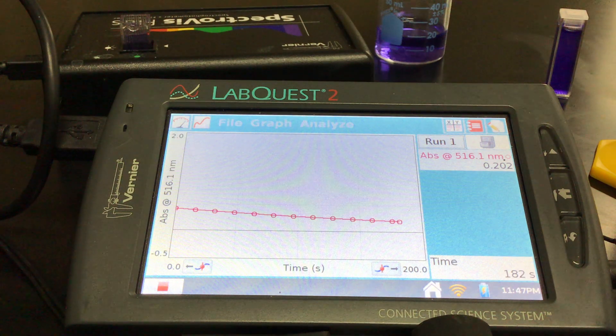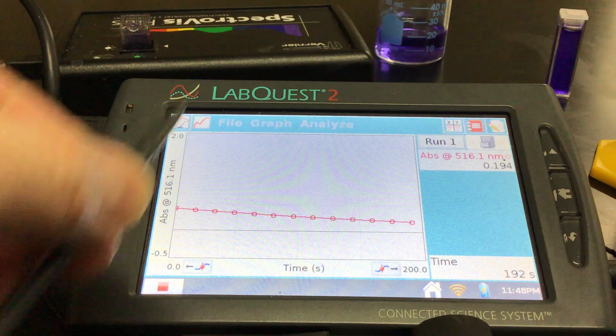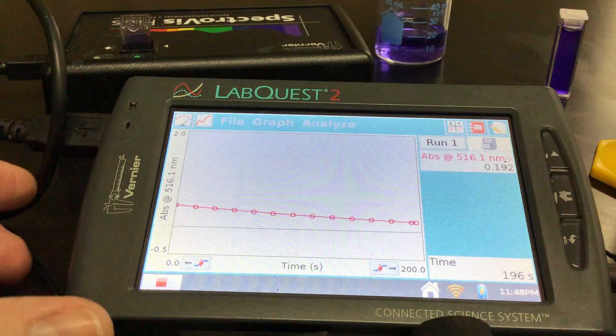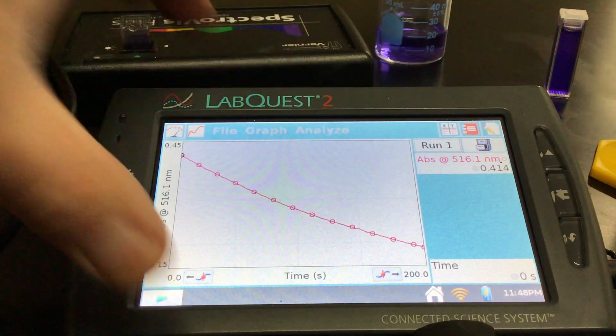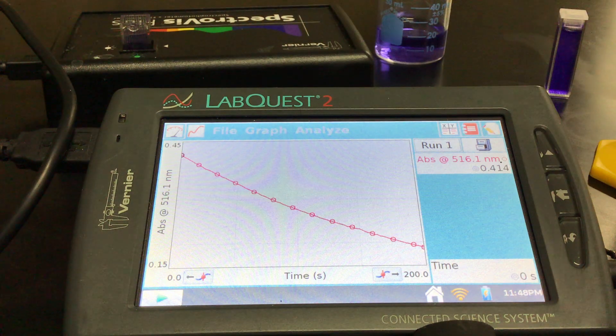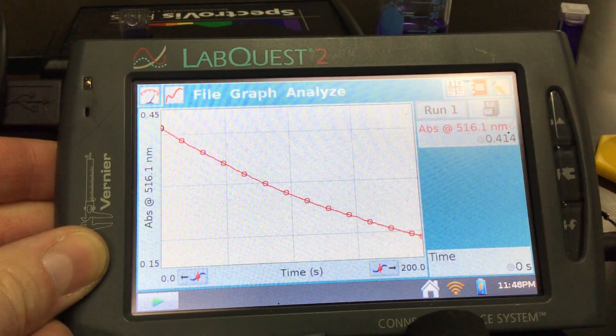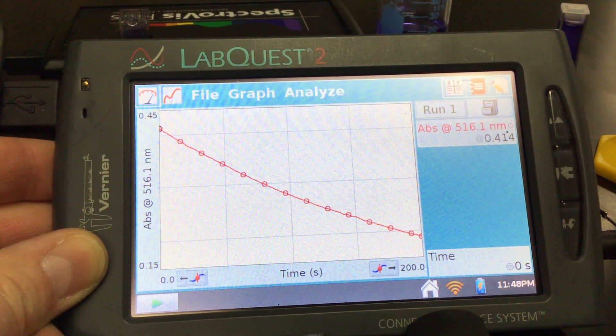One nice thing about the LabQuest is that after this they generally auto scale to fit the screen. If they don't, you can go under graph, graph options and change it. It's a little hard to see with the angle of the LabQuest, but there we go. So to my eye it doesn't look like this is a linear relationship.